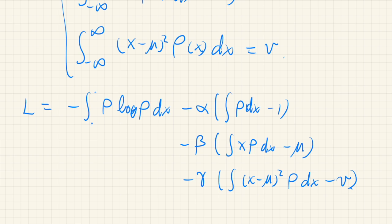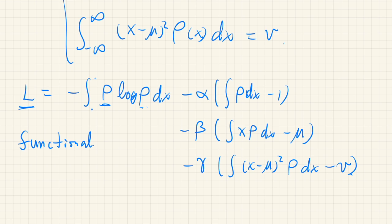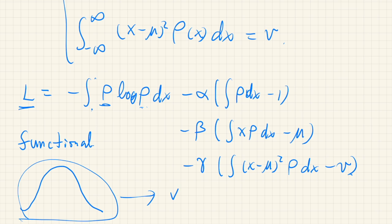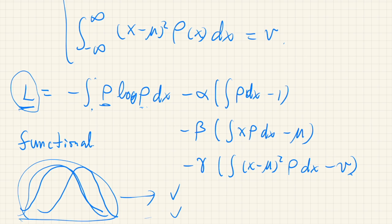In the discrete case we could differentiate with respect to each probability measure, but now we have a function here, so L is not a function but a functional — a function of a function. If we determine an entire function, the functional gives one value; a different distribution gives another value.